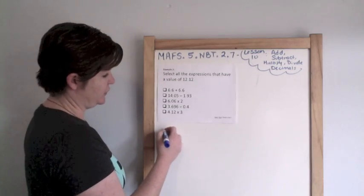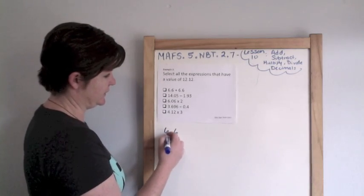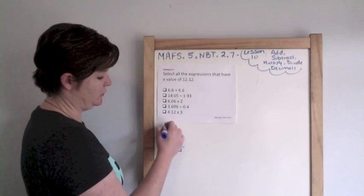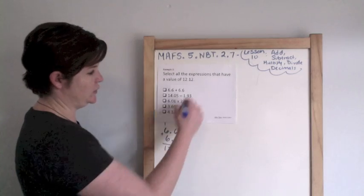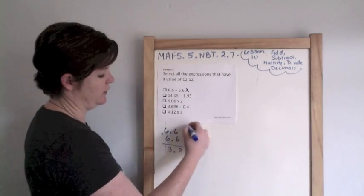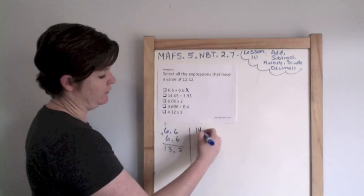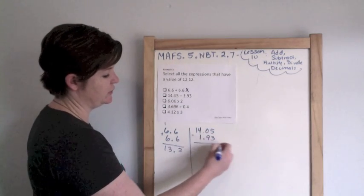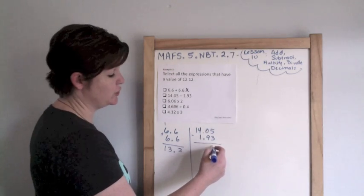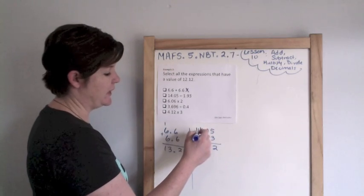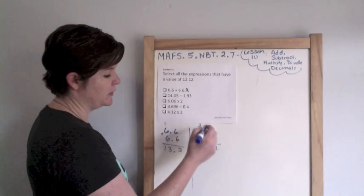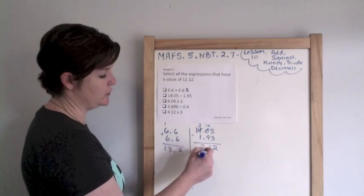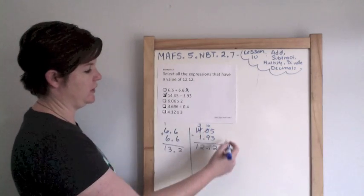All right. So let's start over here. 6.6, 6 and 6 tenths. Add them together. I get 12, 13.2. No, that doesn't work. Next, 14 and 5 hundredths minus 1 and 93 hundredths. 5 minus 3 is 2. 0 minus 9. We can't do that. We need to borrow from here and regroup. Oh, looking good. 3 minus 1 is 2. Boom. That works.